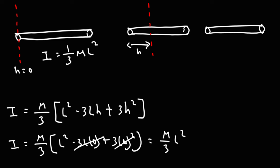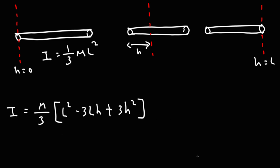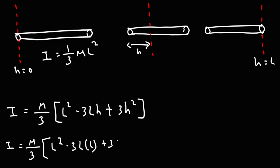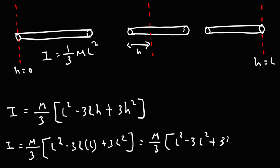What if the axis of rotation is on the other end? In that case h equals l. Replacing h with l: we get m over 3 times l squared minus 3l squared plus 3l squared. The last two terms cancel, and we're left with m over 3 times l squared, which gives us the same formula: 1/3 mL squared.